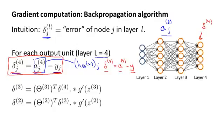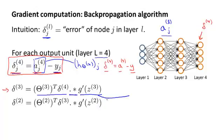What we do next is compute the delta terms for the earlier layers in our network. Here's the formula for computing delta three. Delta three is equal to theta three transpose times delta four, and this dot times is the element-wise multiplication operation. So theta three transpose times delta four is a vector, and g prime of z3 is also a vector, and dot times is an element-wise multiplication between these two vectors. This term g prime of z3 is formally the derivative of the activation function g evaluated at the input values given by z3. What you do to compute these g prime derivative terms is just a3 dot times one minus a3, where a3 is the vector of activations.